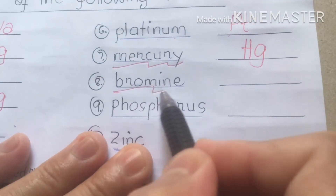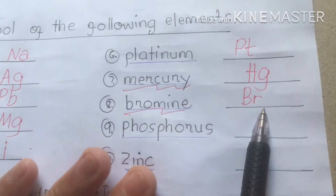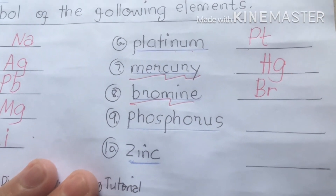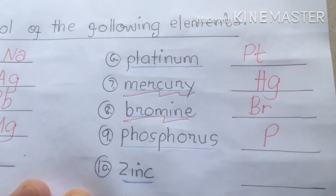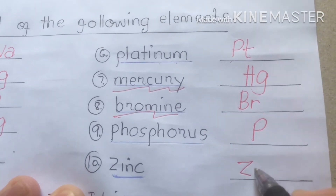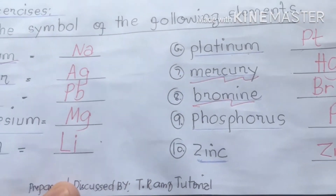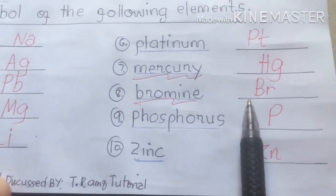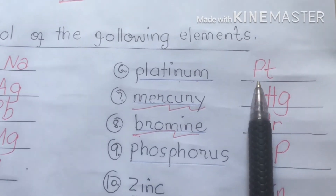Next is bromine — symbol Br, uppercase and lowercase. Phosphorus — symbol is uppercase P. Zinc — symbol is Zn, uppercase Z and lowercase n. So to review: Zinc is Zn, Phosphorus is P, Bromine is Br, Mercury is Hg, Platinum is Pt.